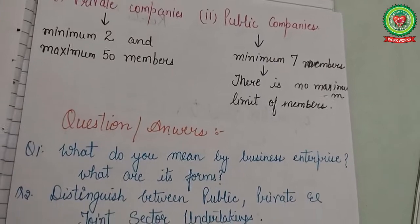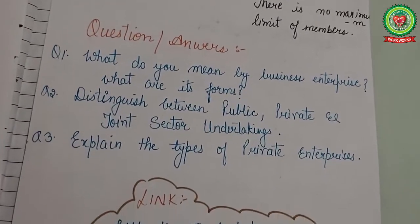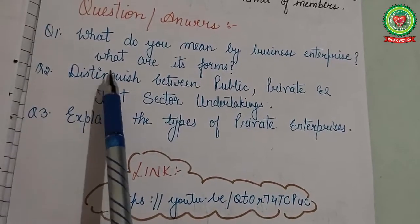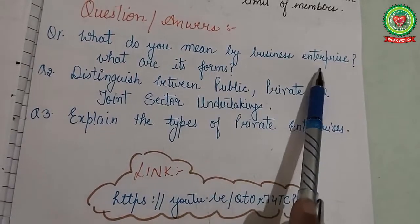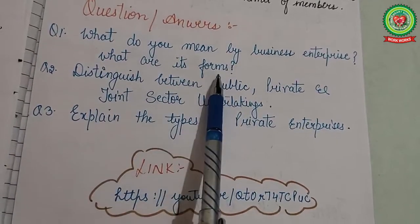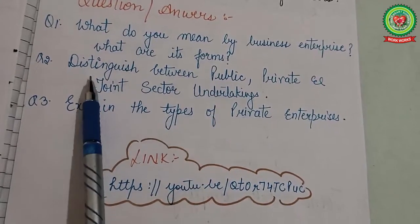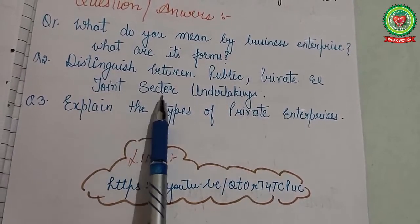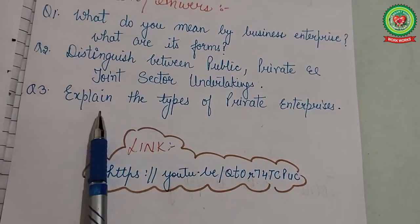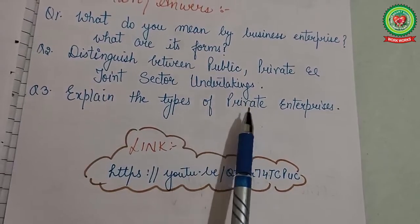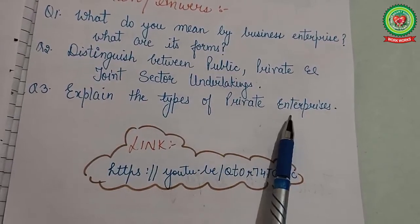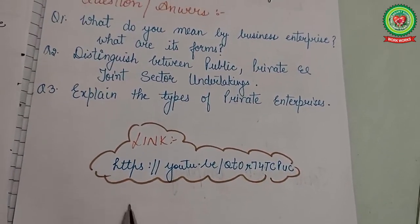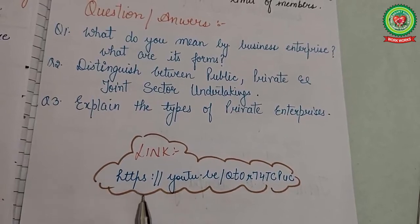This is all about today's topic. Now you have to write the question answers. First: What do you mean by business enterprise and what are its forms? Second: Distinguish between public, private, and joint sector undertakings. Third: Explain the types of private enterprises. Go through the various links on YouTube so that you can write these answers properly.